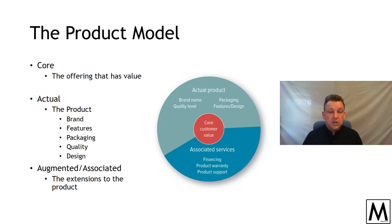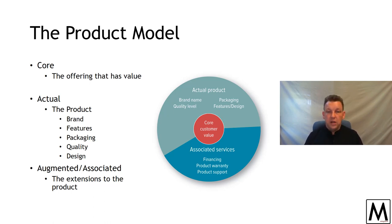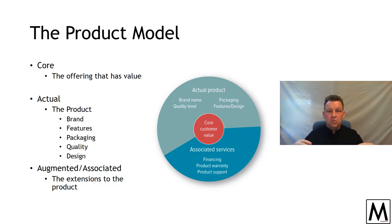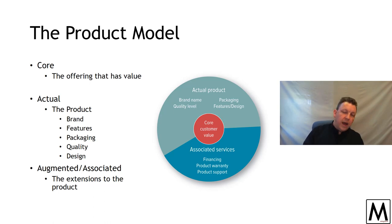The actual product is driven by the marketer. This is the traits, elements and artifacts of the object — concepts such as the brand name, the features, the packaging, the level of quality, the design — all of those sit together to form what the product is in terms of an offering. If you think of the core as the value, the actual is the offering.